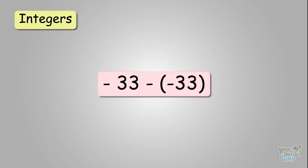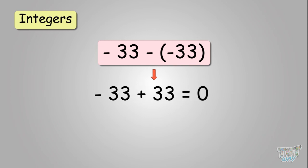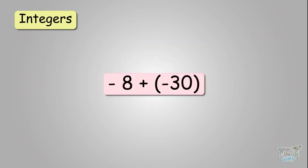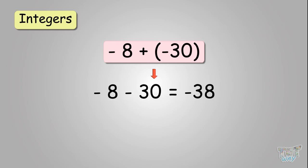Next: minus thirty-three minus negative thirty-three. Open the brackets to get a positive sign, so it becomes minus thirty-three plus thirty-three. Then you subtract, and this equals zero. Zero never takes any sign — neither negative nor positive. Zero will be zero, not minus zero or positive zero. Next: negative eight plus negative thirty — remove the brackets to get negative eight minus thirty. They have the same signs, so you add to get negative thirty-eight.